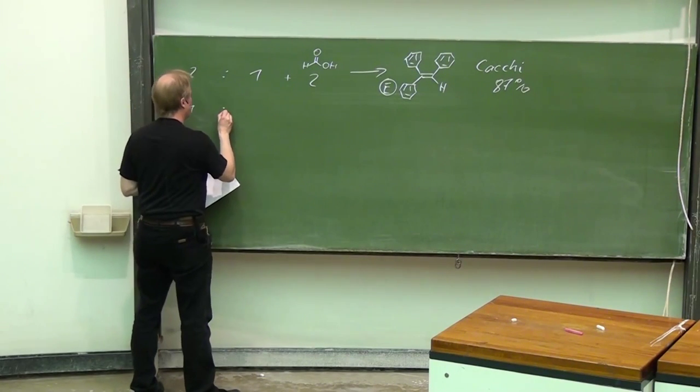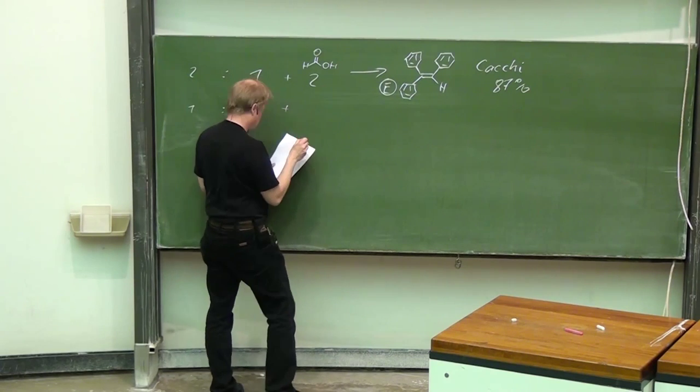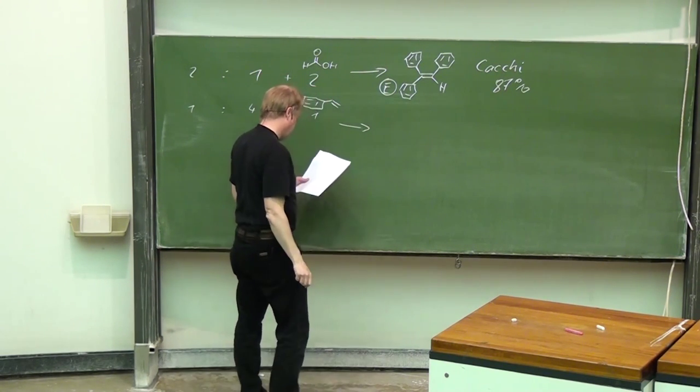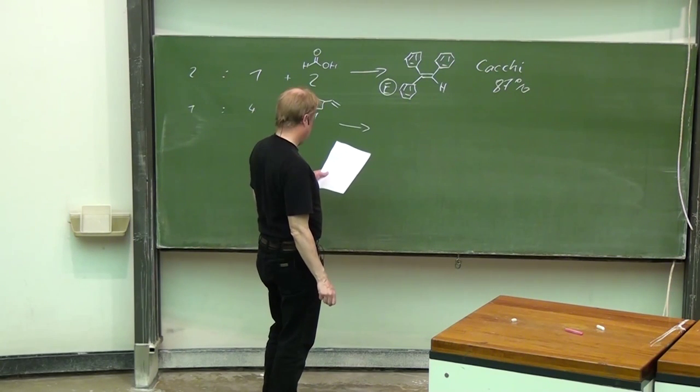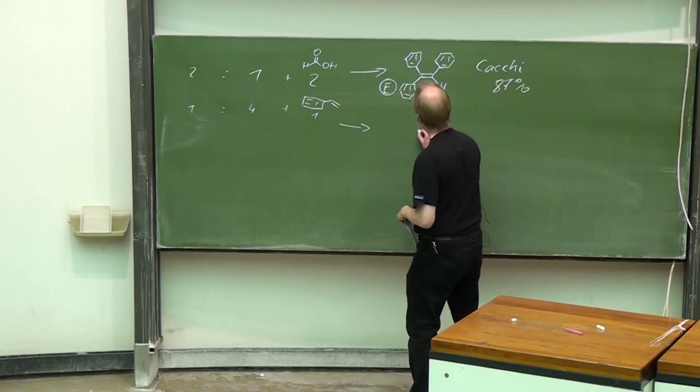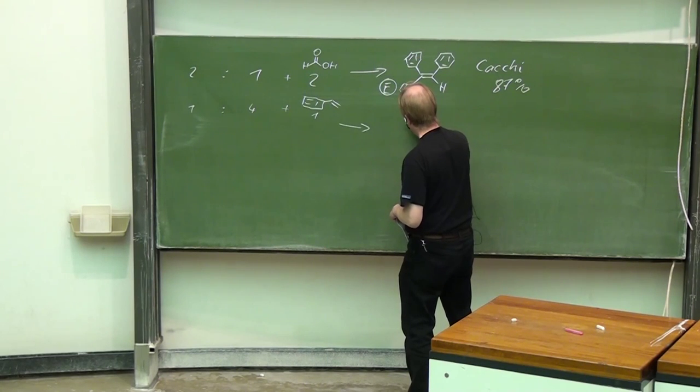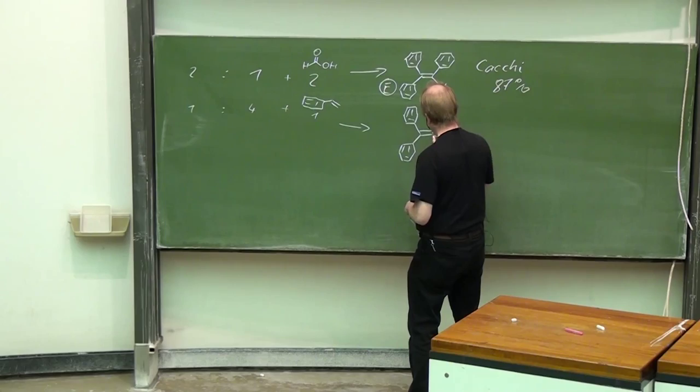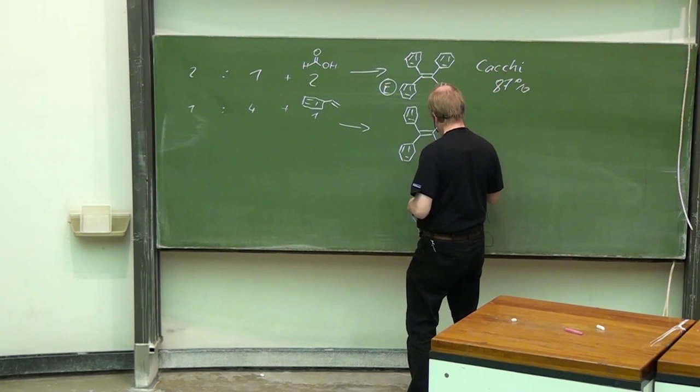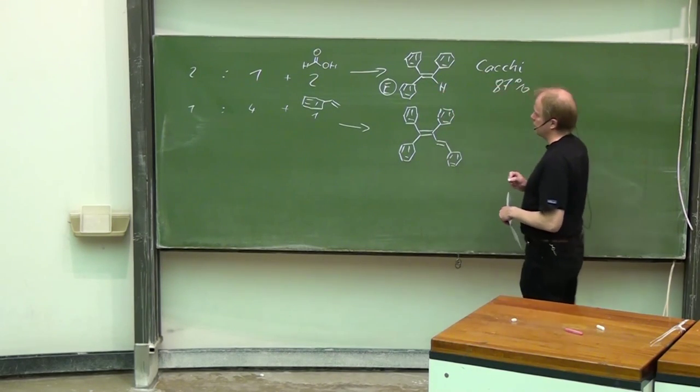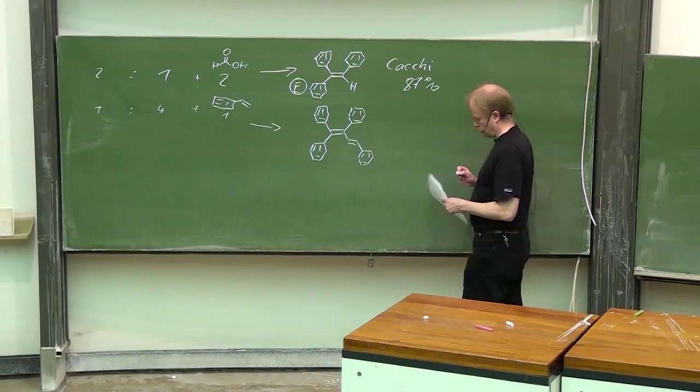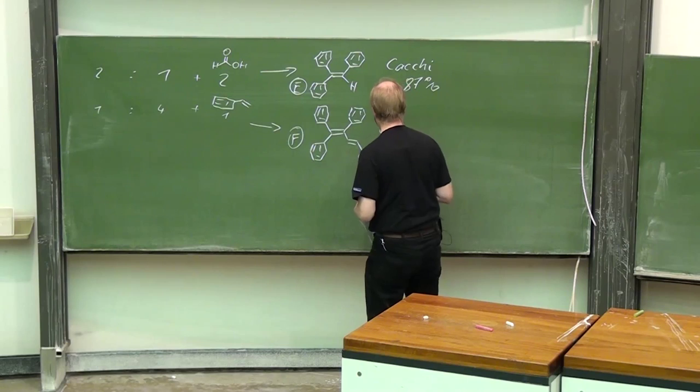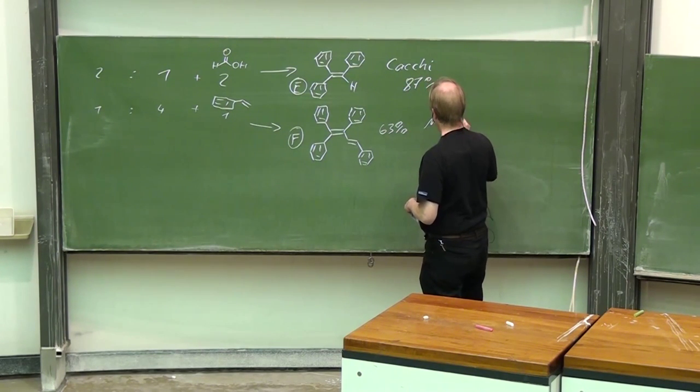A ratio of one to four plus one equivalent of styrene will deliver a triphenyl ethene with an additional vinyl substituent. Here you will find again the styrene moiety, so a diene system is formed. This is product F obtained in 63 percent yield, again a result by the Miura group.